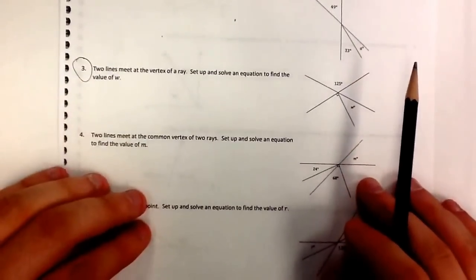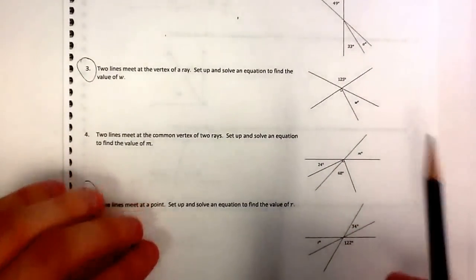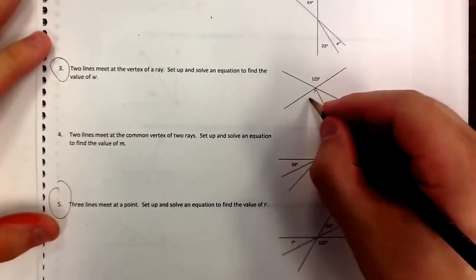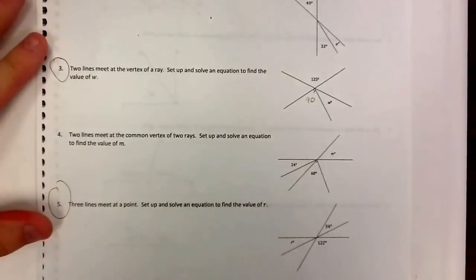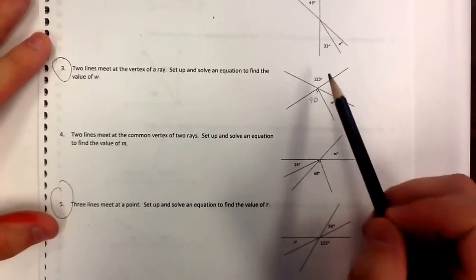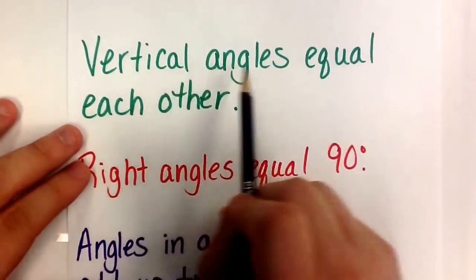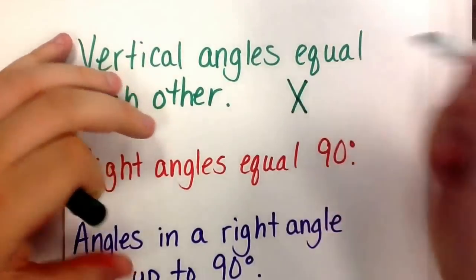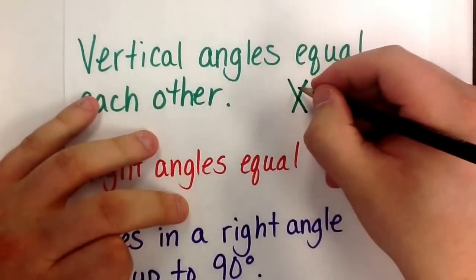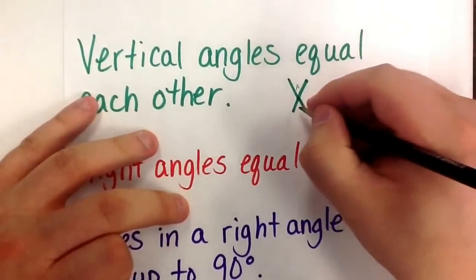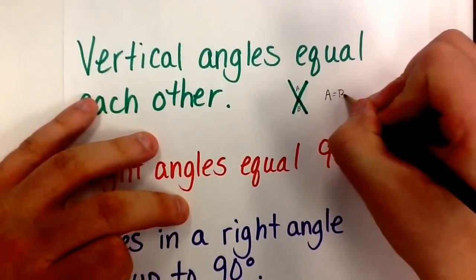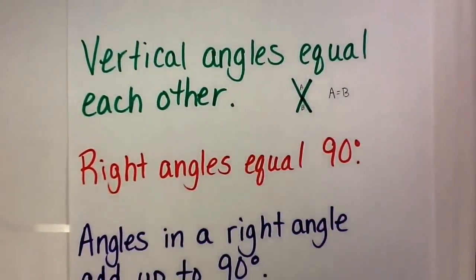Number three: two lines meet at the vertex of a ray — set up and solve an equation to find the value of W. Once again I see this little square here, so I'm going to label this right off the bat: this is a 90 degree angle. If I look back to our notes, we know that vertical angles equal each other, and vertical angles are angles that are crossed from each other. So this angle — we'll call that angle A — and we'll call this angle B. Since they are across from each other, we know that A equals B. Vertical angles are equal to each other.